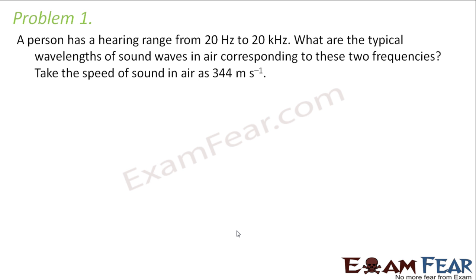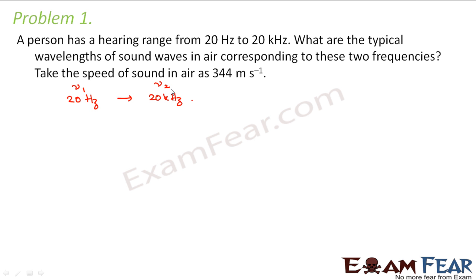The problem says: a person has a hearing range from 20 Hz to 20 kHz. What are the typical wavelengths of sound waves in air corresponding to these two frequencies? So the frequency range is given — we call this nu 1 and nu 2. We have to calculate the wavelengths lambda 1 and lambda 2 corresponding to each frequency.